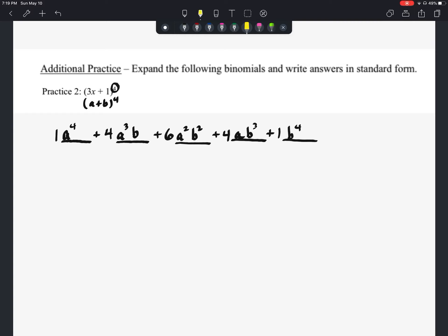And now we'll just take it here and we'll plug in the values that we need to for our a values and the values that we need to plug in for b, which would be just positive one on this one. All right, so here we go. We've got one times 3x to the fourth plus four. We're going to have 3x to the third. And our b value is one, so just times one plus six times 3x to the second times one squared plus four times 3x times one to the third and then plus one times one to the fourth.